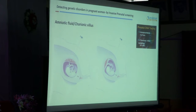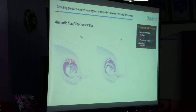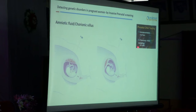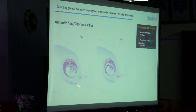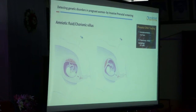Amniocentesis is done only at 16 weeks. If parents want earlier testing, we can put a needle and take out part of the placenta, which also has cells of the fetus — a process called chorionic villus sampling, or CVS. This can be done after 9 to 11 weeks. Beyond 9 to 11 weeks, when we reach the 15 to 17 week window, we can do amniocentesis. All these tests will be completed in 2 to 3 weeks, so before 24 weeks we must give results to the doctors.